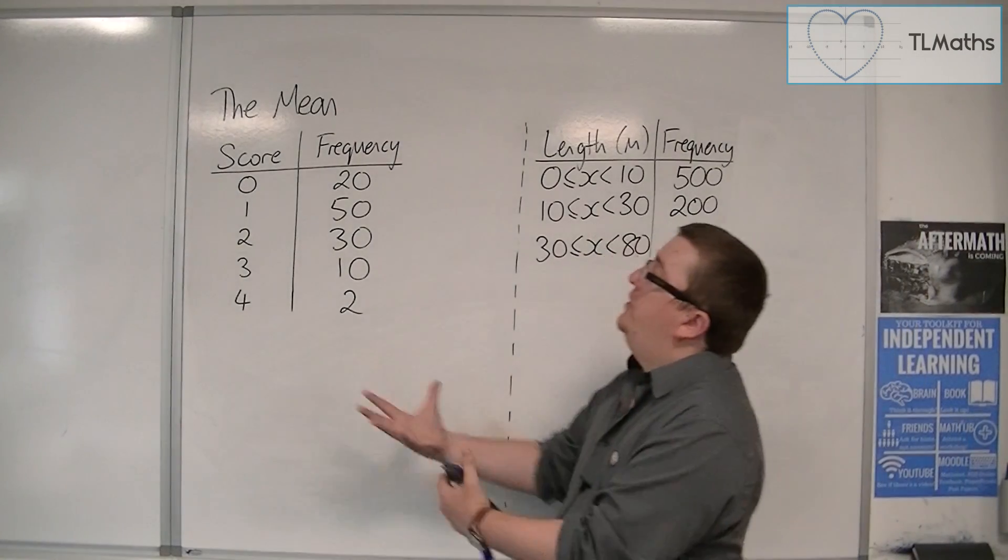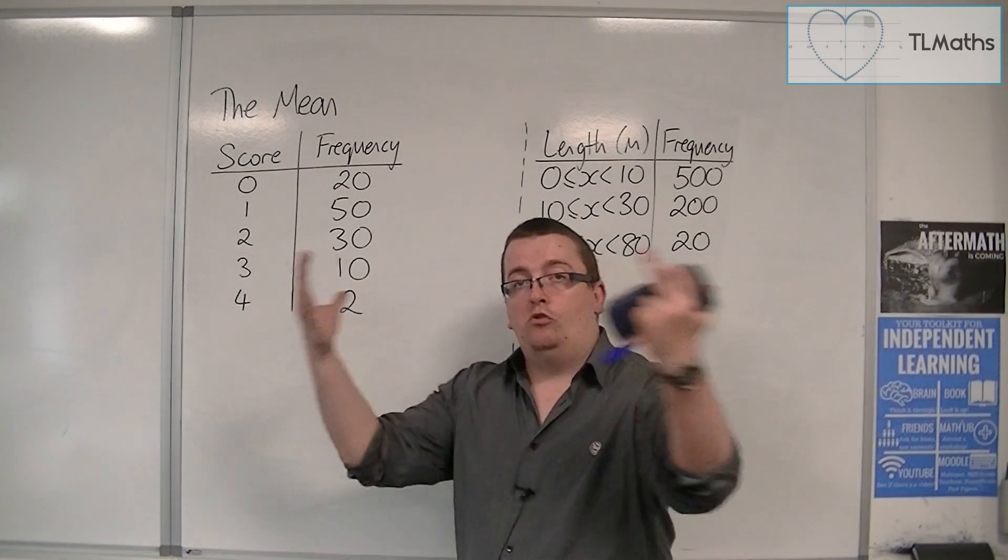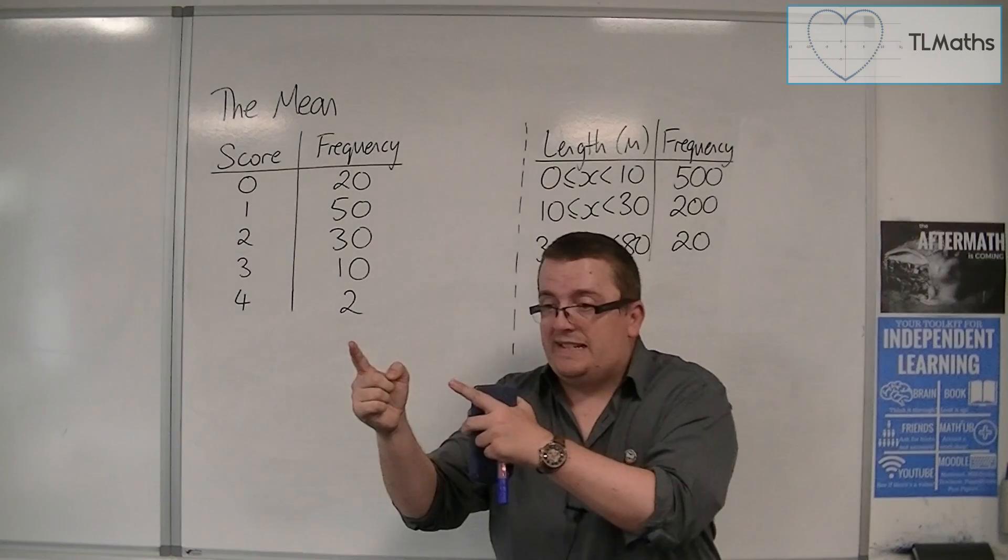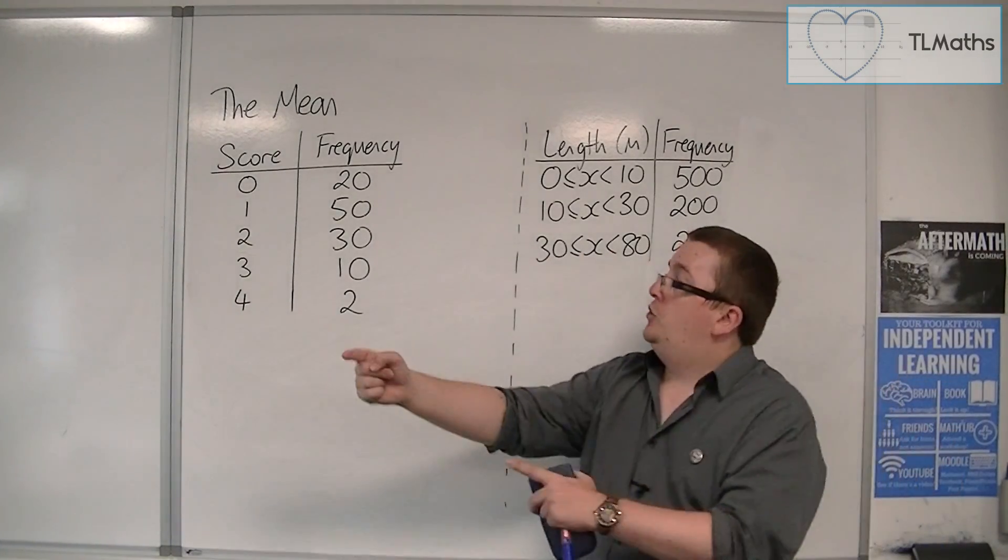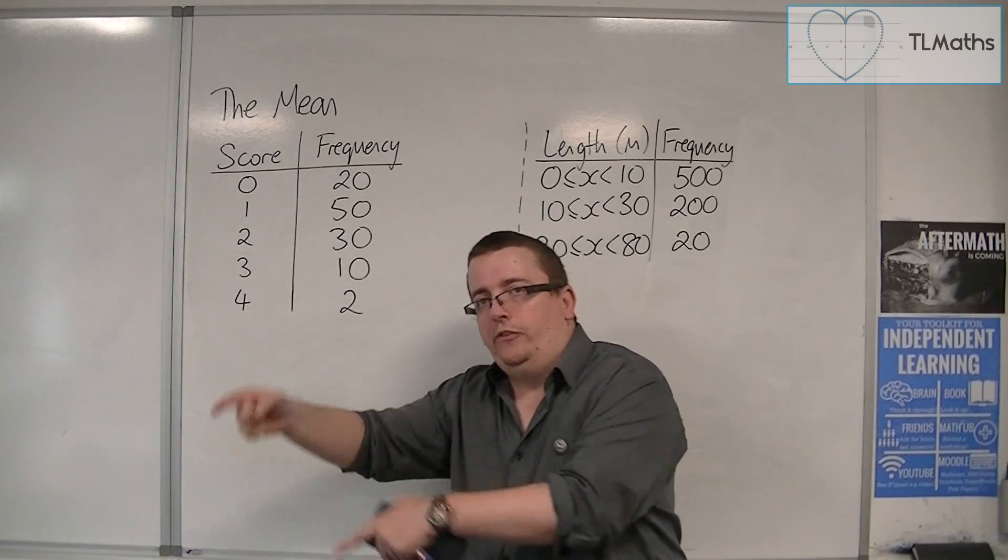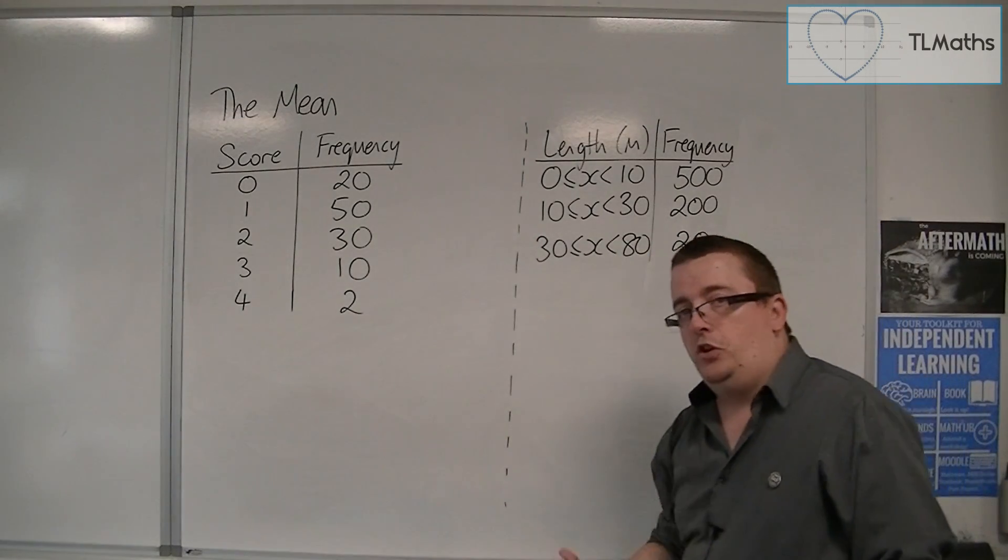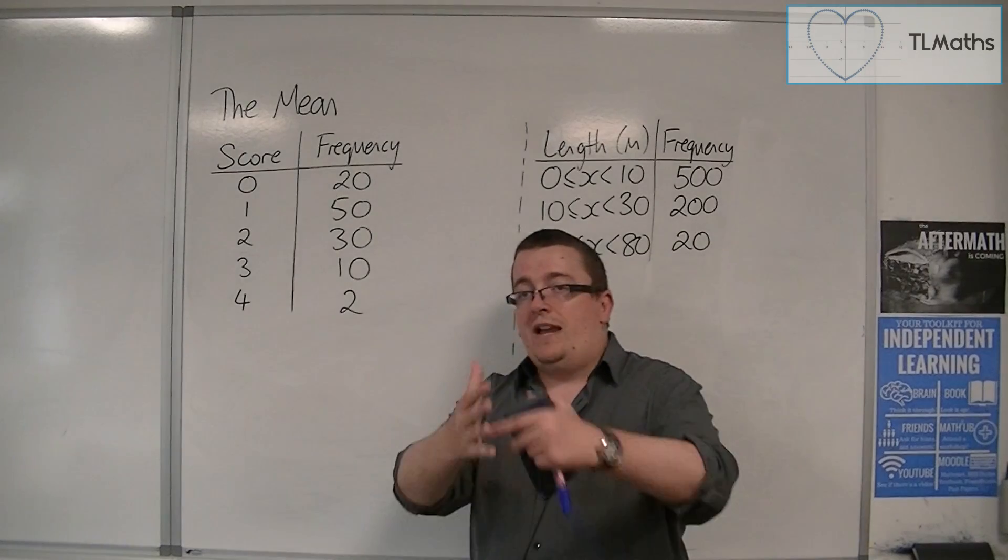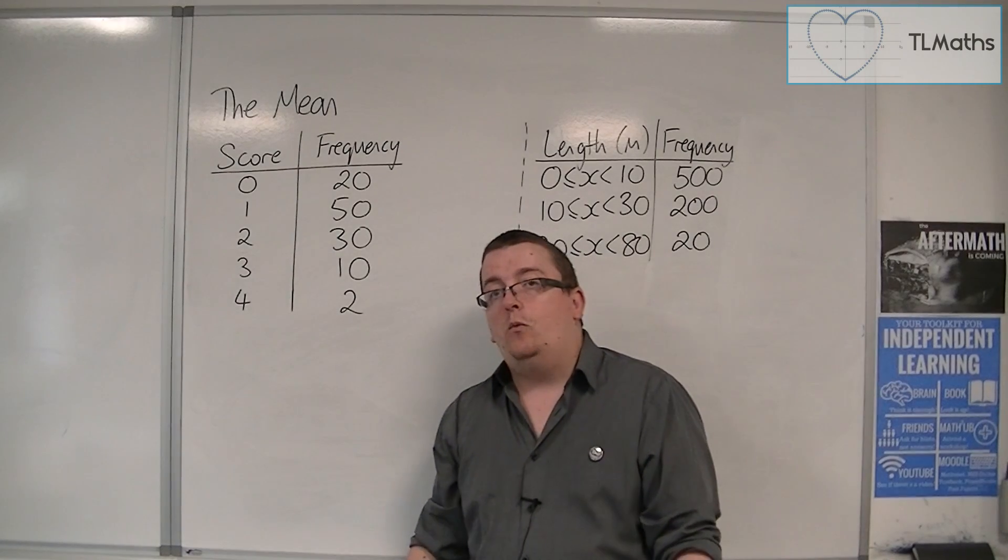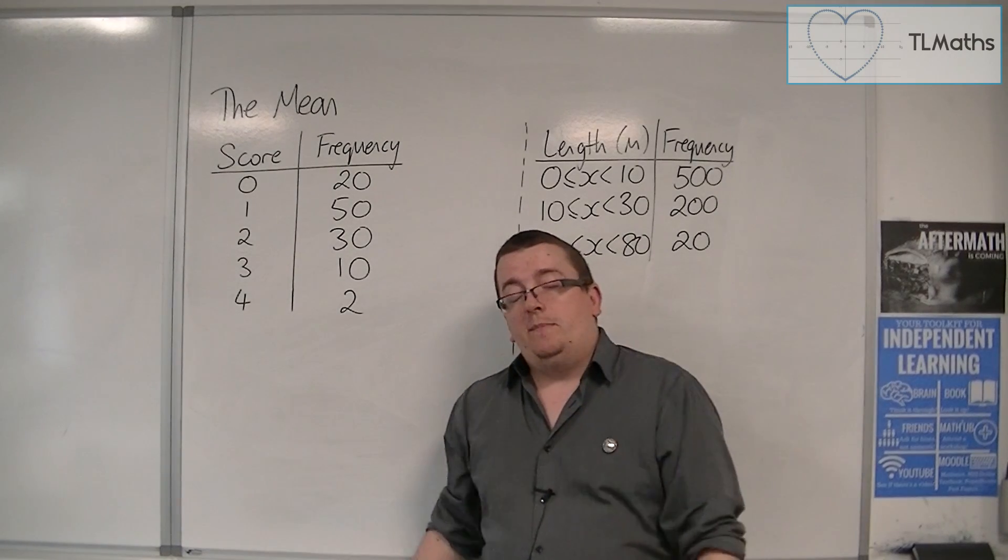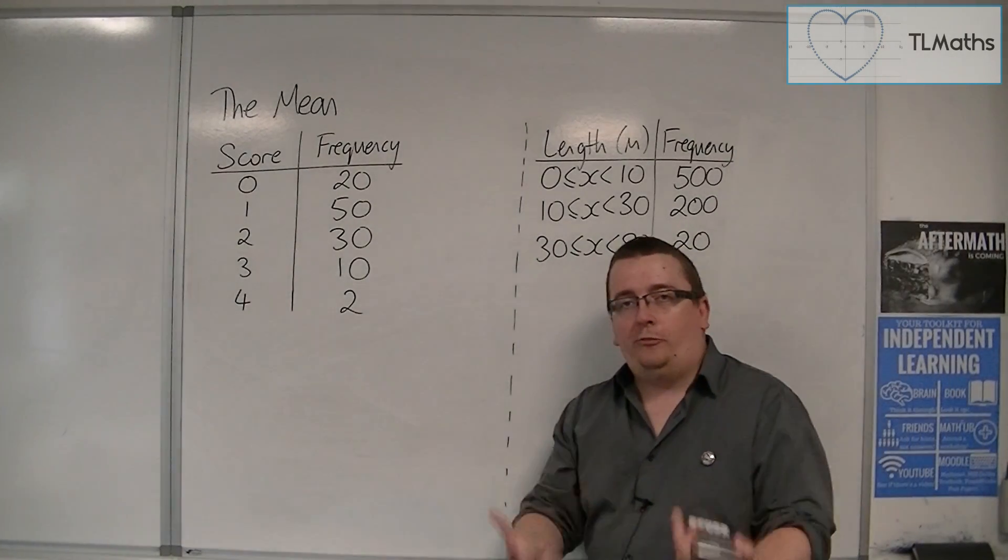Because otherwise, the whole point of a frequency table is that I haven't written out the data in a raw format. I haven't got 20 zeros, 0, 0, 0, 0, all the way along 20 times, and then I've got 50 ones, 1, 1, 1, and then I've got 30 twos, and 10 threes, and 2 fours. If I had that as one big sheet of paper of numbers, and then I had to add them all together and divide by how many there were, that would take me a long time. That's ultimately the problem. So we want to speed this up.